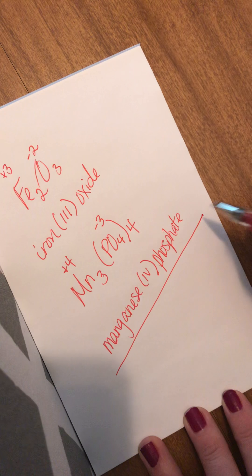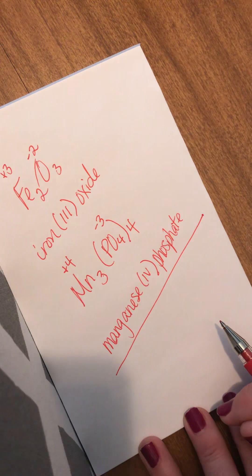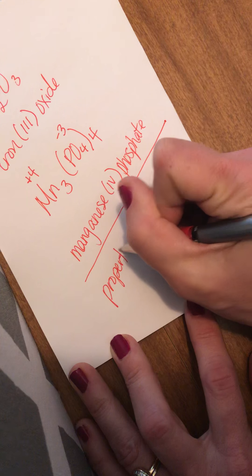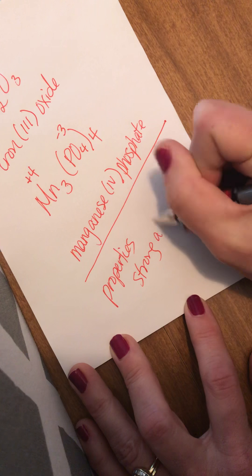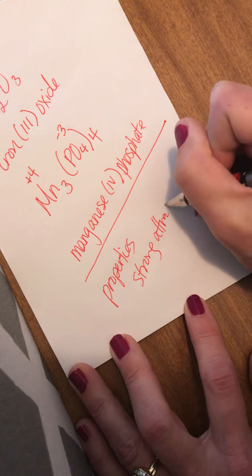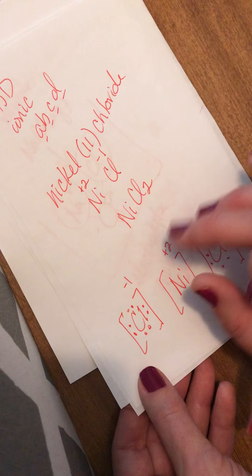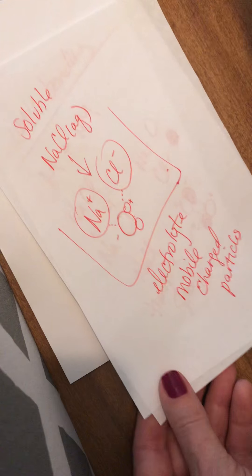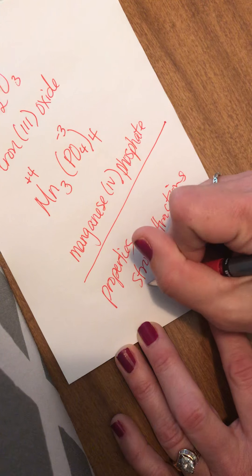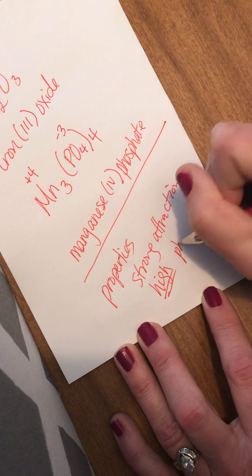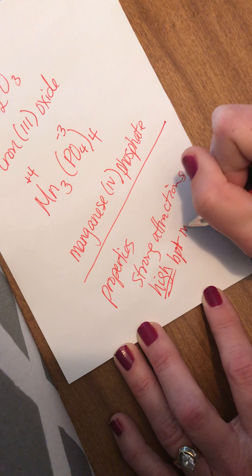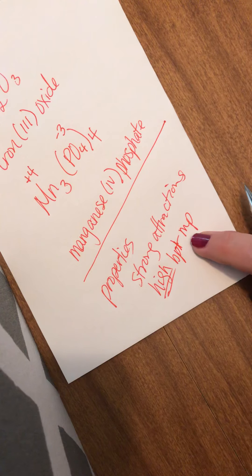Alright, so this would be the name of my ionic compound. So properties of ionic compounds: they tend to have very strong attractions. Again, that goes back to what we drew at the beginning with the positives and negatives. So here's positives and negatives. Another NaCl would be very attracted to it because of the charges. So strong attractions, strong attractions lead to high boiling points and melting points.